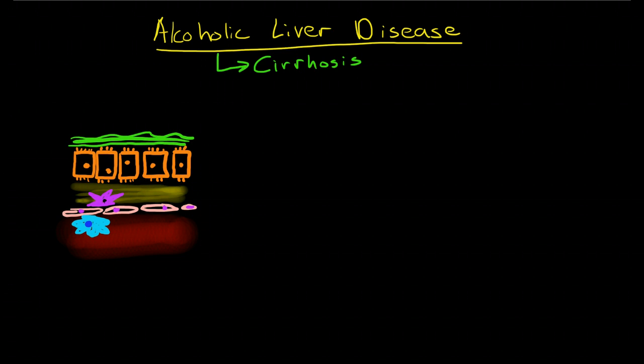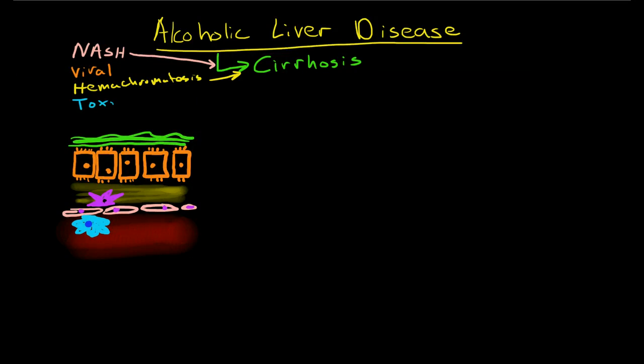Cirrhosis can also be caused by a disease called NASH, which is non-alcoholic steatohepatitis, which is caused by fatty deposition in the interstitial spaces of the liver. It can also be caused by viral diseases, hepatitis A, B, and C. It can be caused by hemochromatosis, which is deposition of iron in the liver, and it can also be caused by a variety of toxins. They share many aspects of the pathophysiology in common.